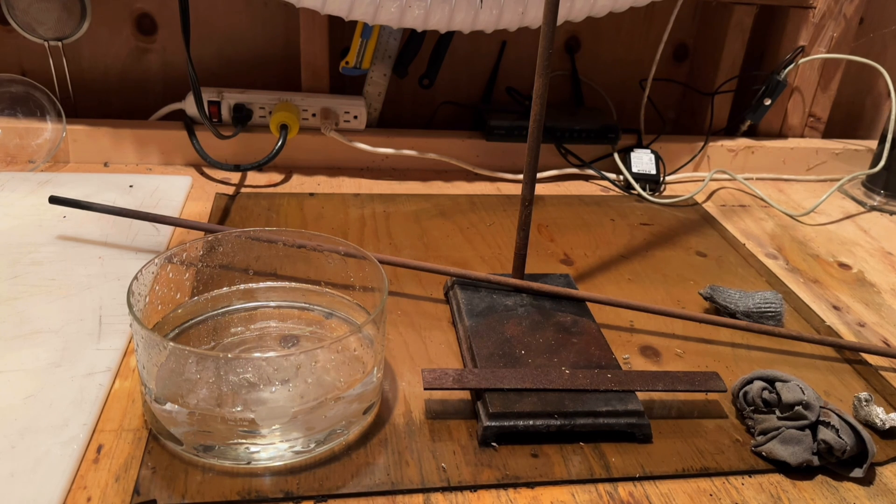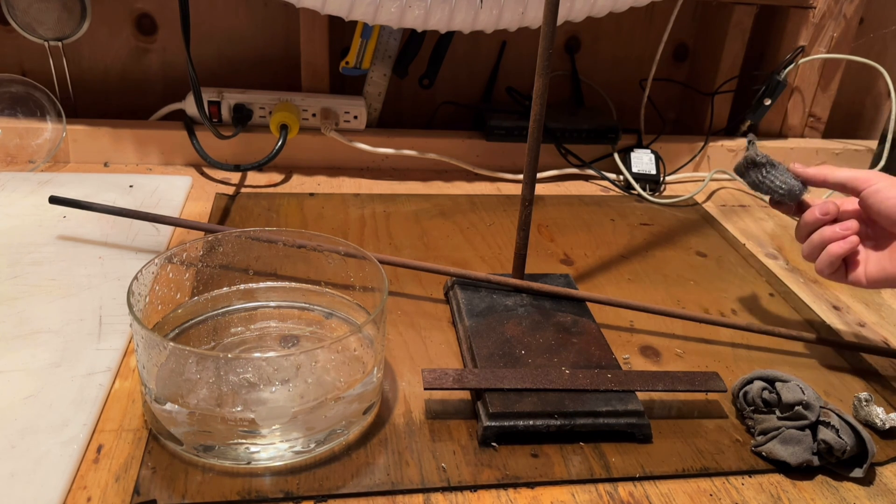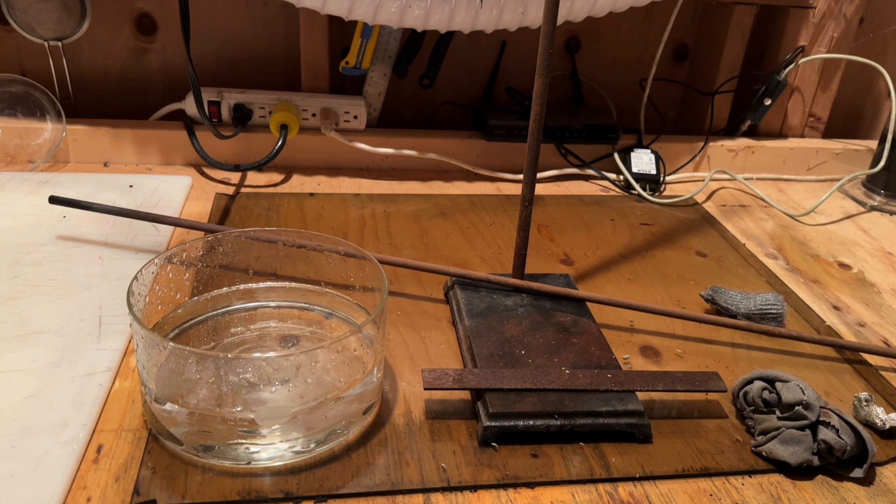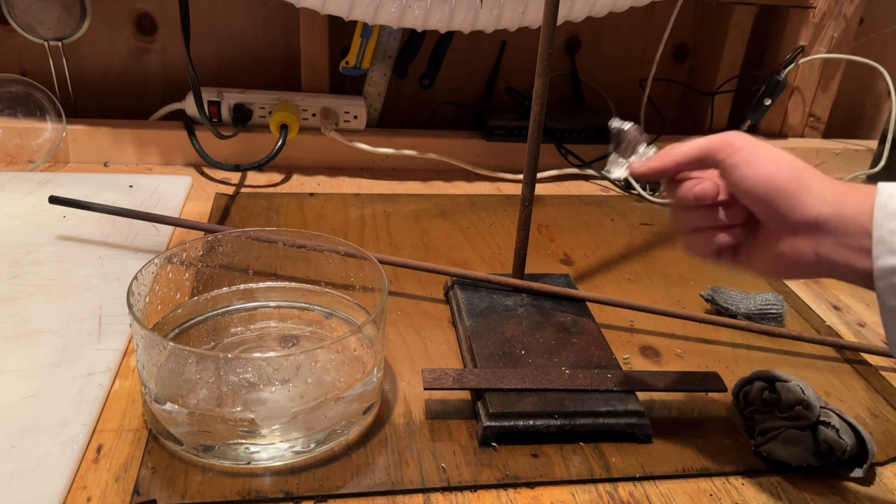Now generally when people go to remove rust they reach for something like steel wool or another abrasive to try to grind off the rust, however there's a better alternative which is aluminum foil.